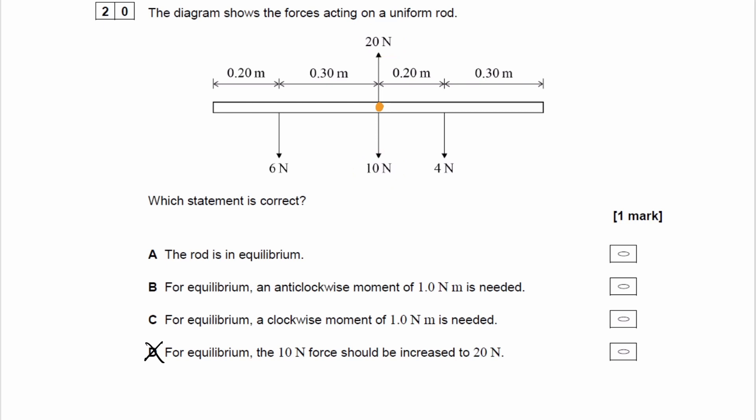Remember that moment is equal to force times perpendicular distance. Well, because both of these forces, the 20 and the 10, they act through our pivot point. There is no distance from those forces. There is no perpendicular distance from those forces to our pivot point. And therefore, there wouldn't be a moment.